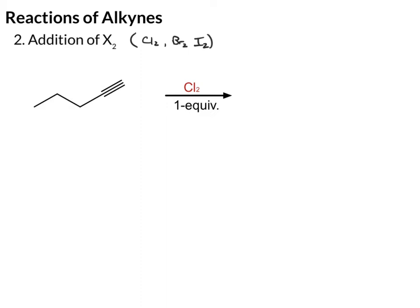In this example, we have the alkyne and we're adding one equivalent of Cl2. What that's going to do is add a chlorine to each side of the triple bond. So we'll go from the triple bond to the double bond, with a Cl here and a Cl here. And those do add trans to one another.